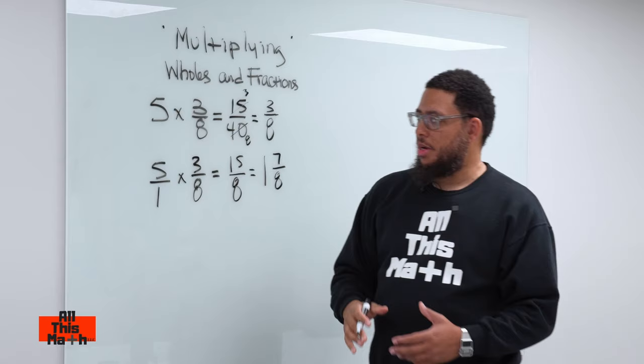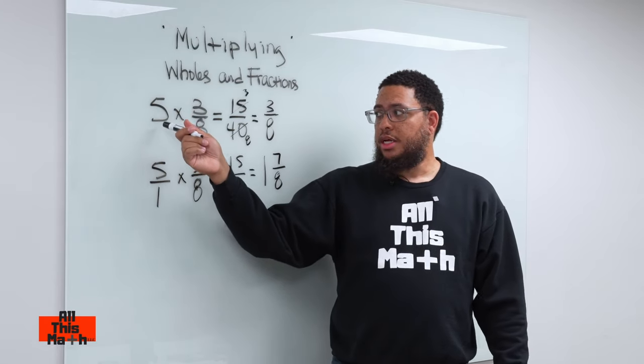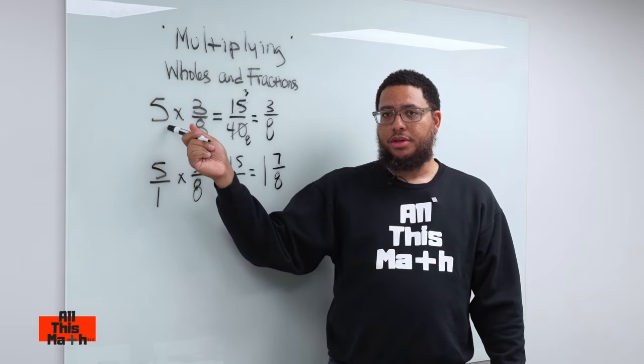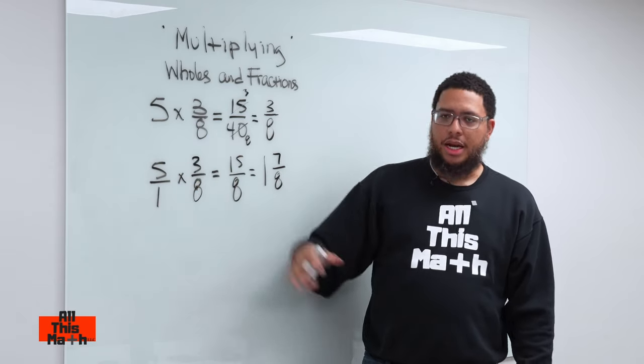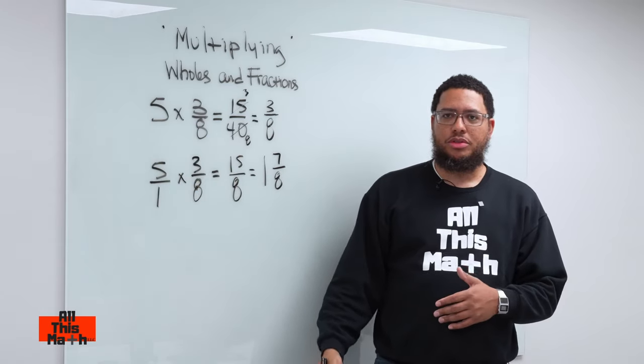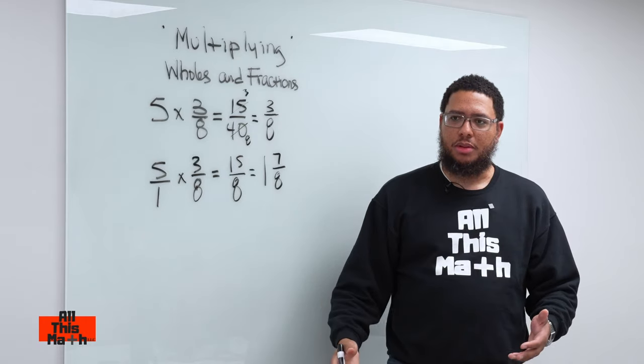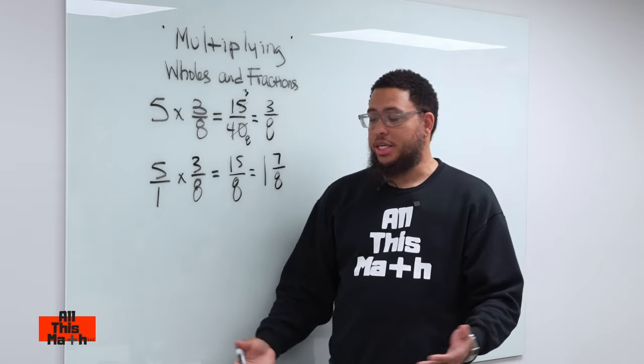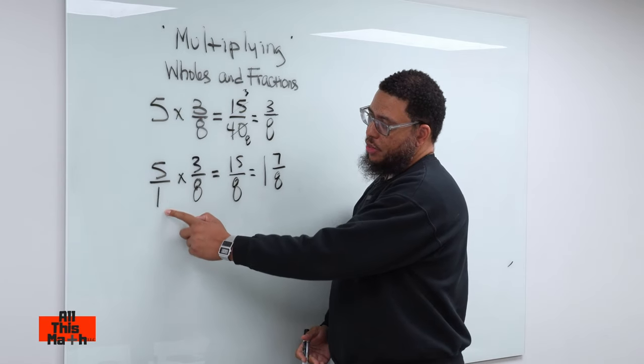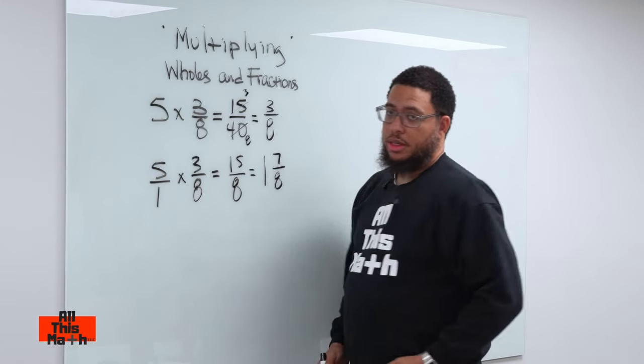But what you got to remember is whenever you have to multiply a whole number by a fraction that invisible denominator under the whole number you got to act like it's there. You know what I'm saying? It's kind of like you throw trash on the ground and you think nobody's watching, you should still pick it up. You shouldn't just leave it there just because you don't think nobody's watching. Act like that one is there at all times. That's today's lesson.